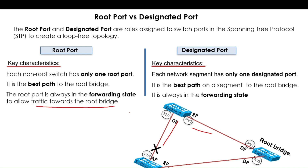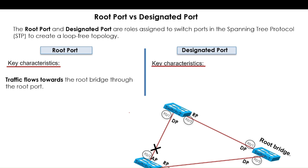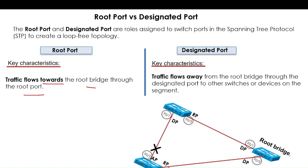Regarding traffic direction: traffic flows towards the root bridge through the root port, and traffic flows away from the root bridge through the designated port to other switches or devices on the segment. That is the difference between root port and designated port. The details about Spanning Tree Protocol, root bridge selection, and the full selection process are discussed in another video — the link will be in the description. Thank you very much for your time, hope to see you in another video.